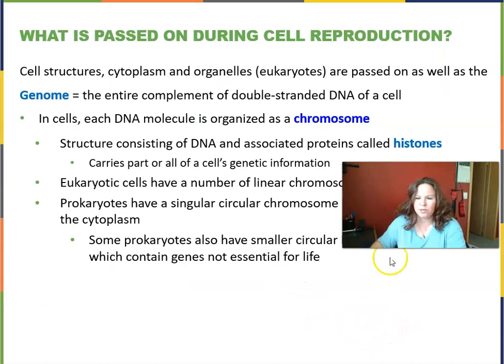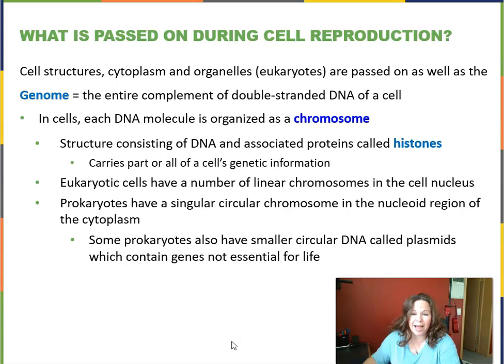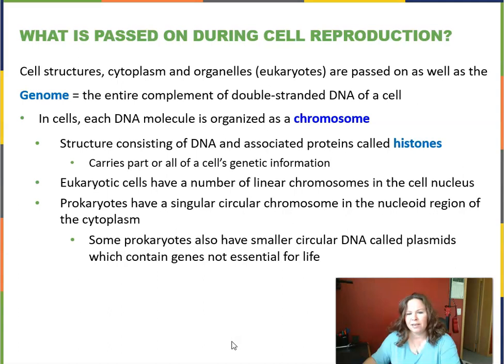So what's actually passed on during reproduction? When a cell divides, whether by mitosis in a multi-celled organism or binary fission in a single-celled organism, you pass on cell structures or organelles — if you're a eukaryote, that includes mitochondria, Golgi, ER, the cytoplasm, and ribosomes. And then, of course, the genome — the entire complement of double-stranded DNA in the cell. That DNA is the instructions for the cell to make all the proteins and other things it needs, such as RNA.